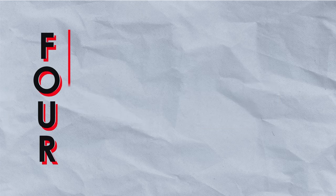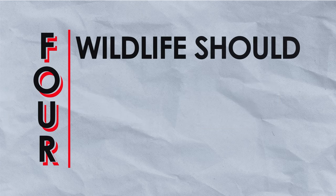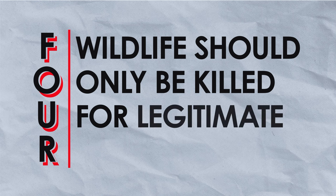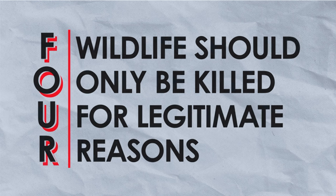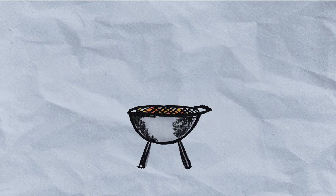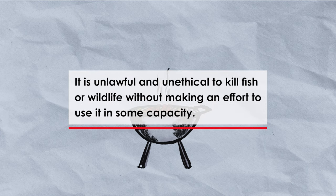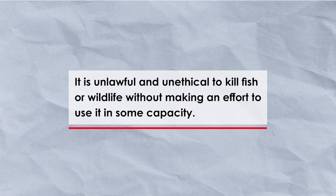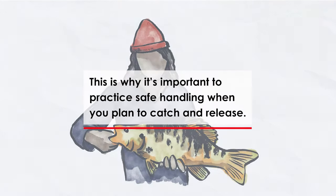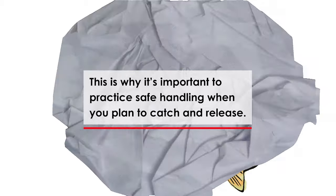Four: wildlife should only be killed for legitimate reasons. In Canada, we're allowed to keep certain types of fish for food, but it's unlawful and unethical to kill fish or wildlife without making an effort to use it in some capacity. This is why it's important to practice safe handling when you plan to catch and release.